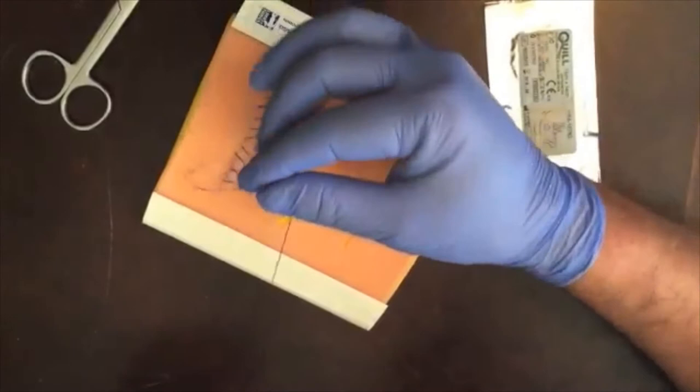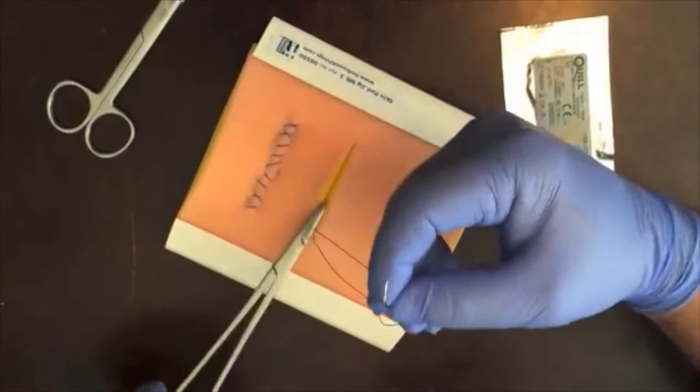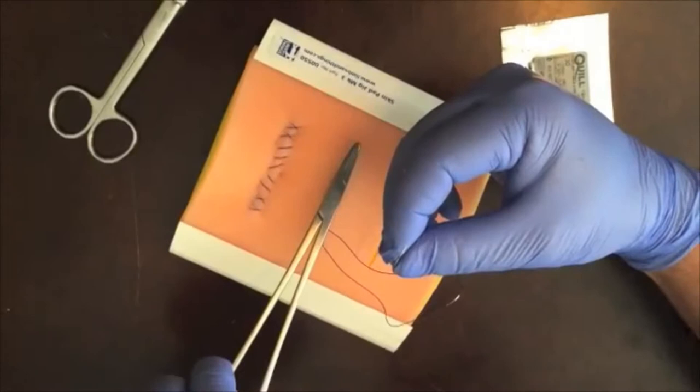Now that we have pulled our thread halfway and achieved barb engagement, we'll take one arm of the thread and run it the distance of the incision down in the deep tissue layer.